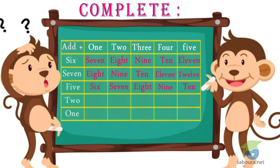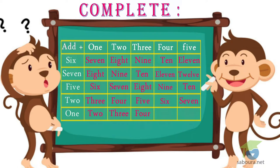2 plus 1 = 3. 2 plus 2 = 4. 2 plus 3 = 5. 2 plus 4 = 6. 2 plus 5 = 7. 1 plus 1 = 2. 1 plus 2 = 3. 1 plus 3 = 4. 1 plus 4 = 5. 1 plus 5 = 6.